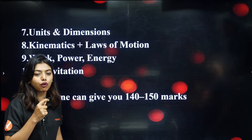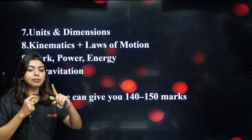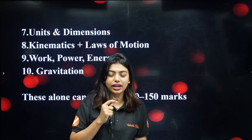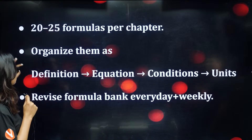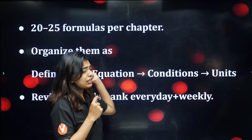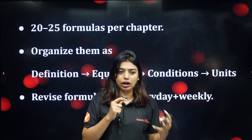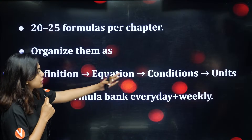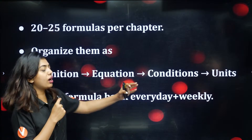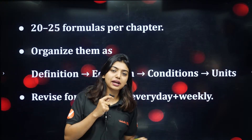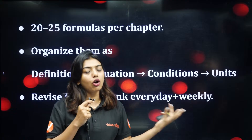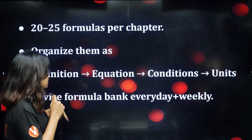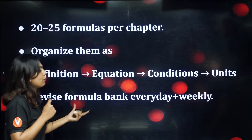So what do you have to follow? 20 to 25 formulas per chapter — you have to make sure that you memorize them. As sir told before also: definition, equation, conditions, units — all this you have to organize in a proper manner. Under one-page notes, if you organize everything properly, your one-page summary notes will already be ready. Coming to a very important thing: revise your formula bank every day.